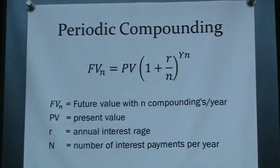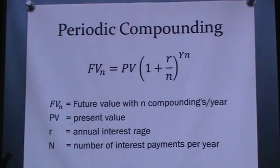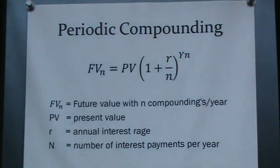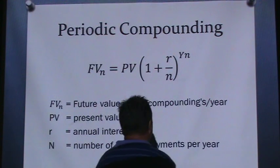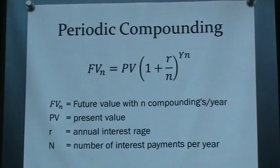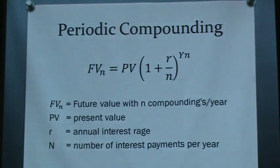Now consider a case where we're going to make payments along the way — not just one big payment at the end. This is where we're compounding interest periodically. For traditional home mortgages or car loans, you typically make a payment every month. So what is, by definition, a rate?